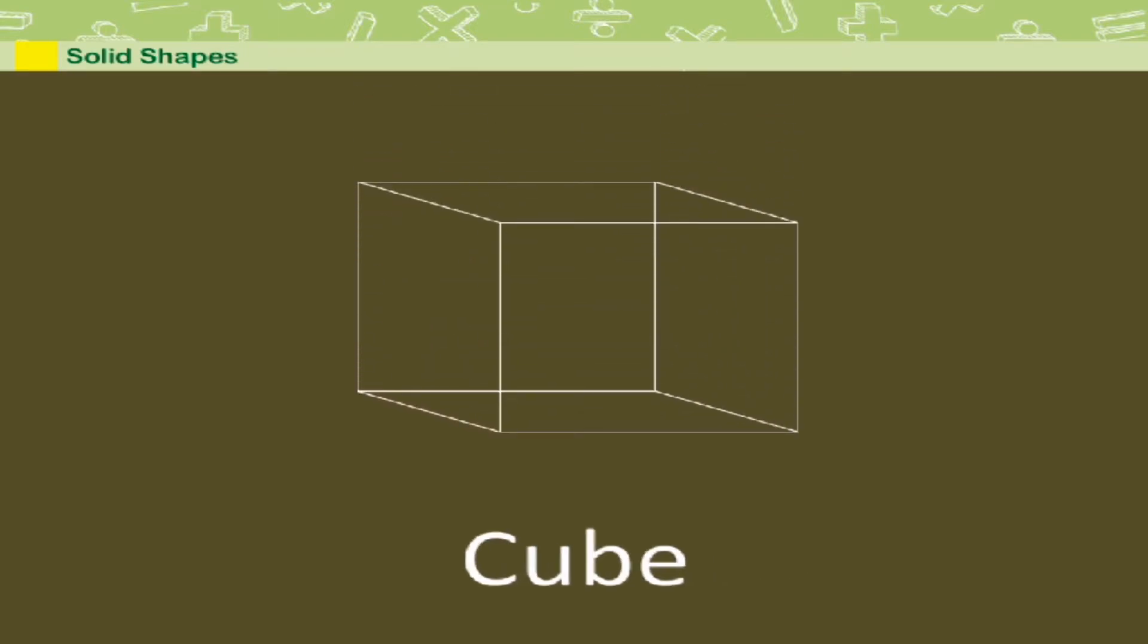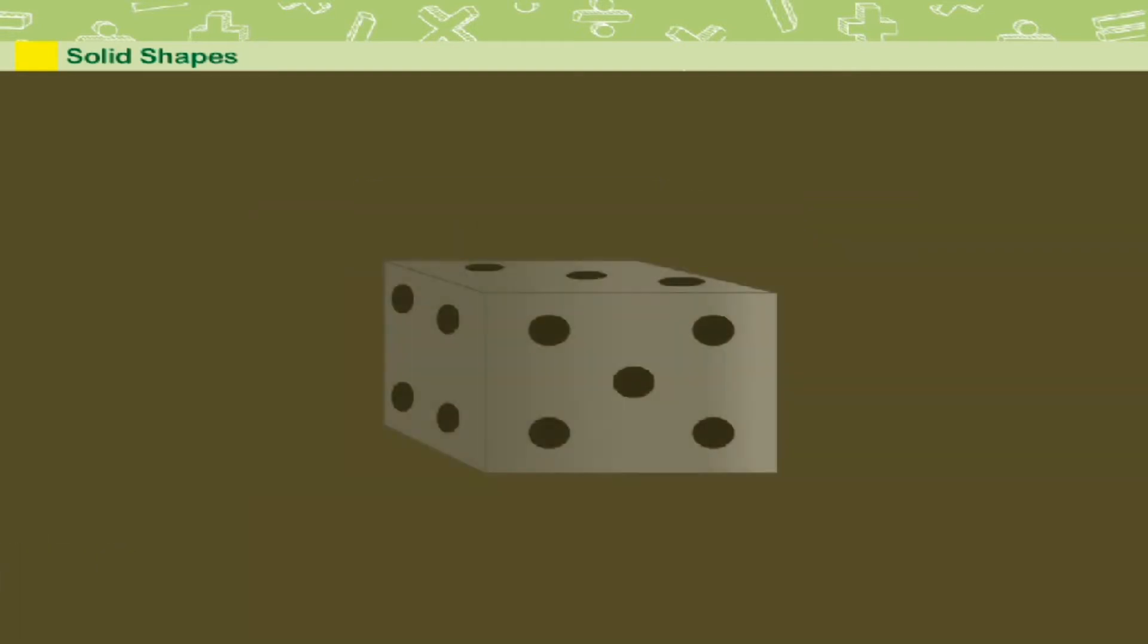Solid Shapes. Let us see some solid shapes. A cube is a solid shape. A cube has six flat surfaces. All the flat surfaces are equal. For example, see this dice. This dice is a cube.